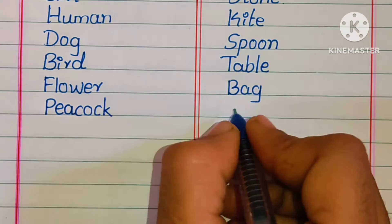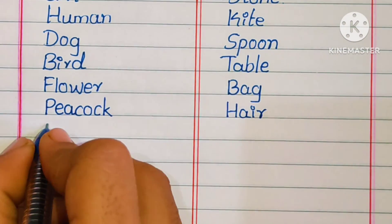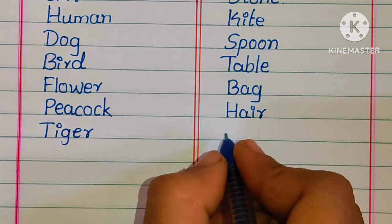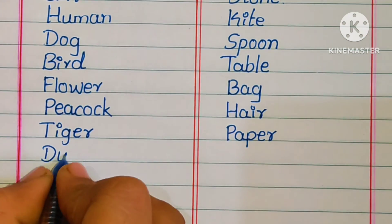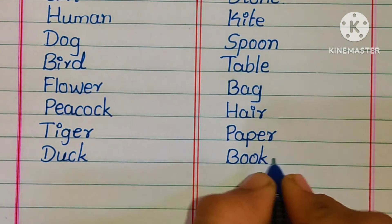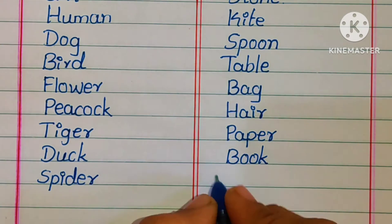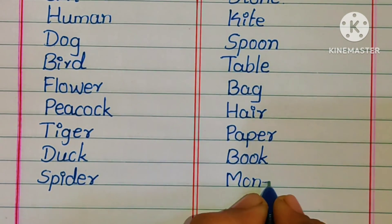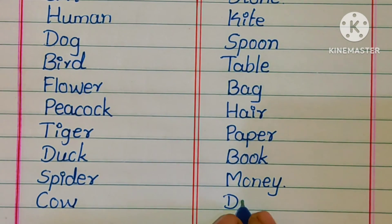Peacock — living thing. Hair — non-living thing. Tiger — living thing. Paper — non-living thing. Duck — living thing. Book — non-living thing. Spider — living thing. Money — non-living thing. Cow — living thing. Door — non-living thing.